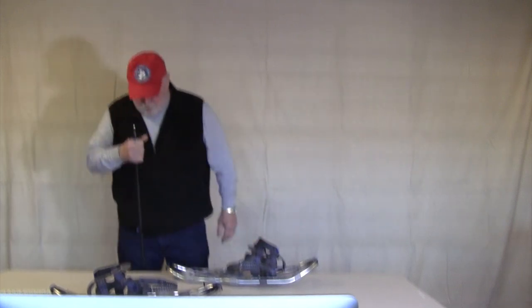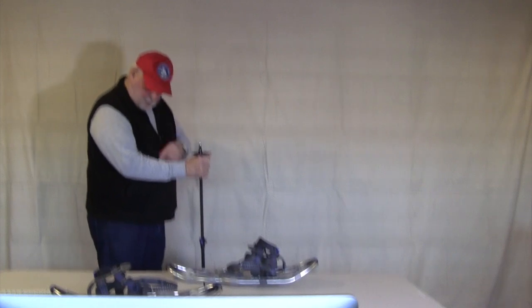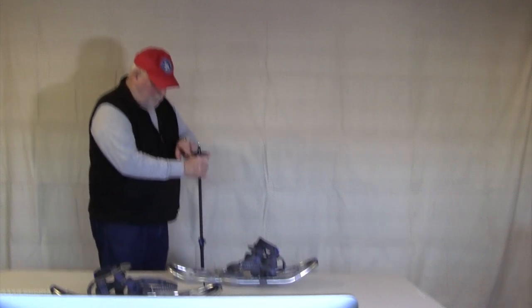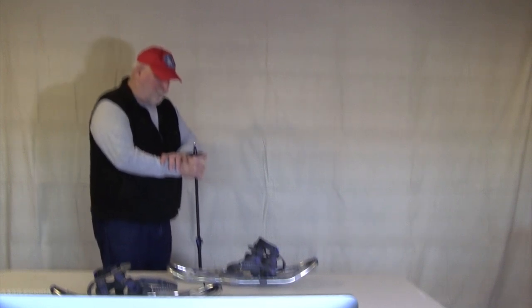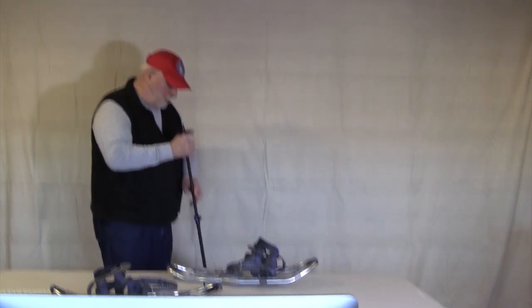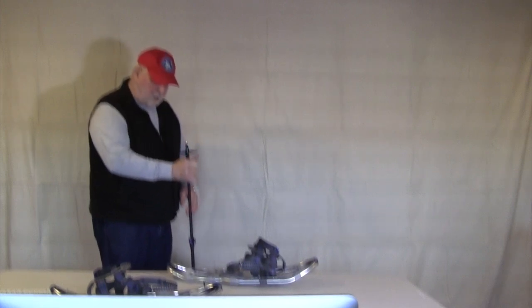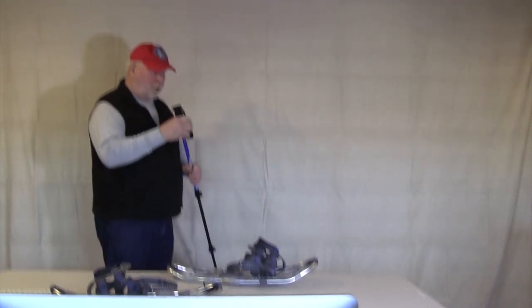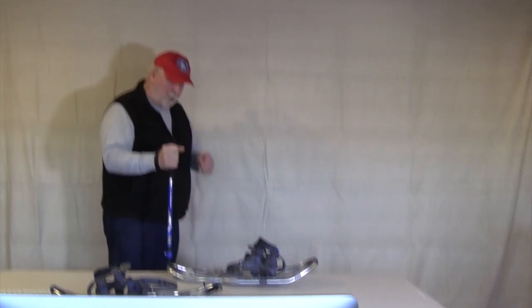Your pole should be about the height where, when you grab hold of it just under the basket, your arm is about 90 degrees. If you're long striding or in deeper snow, you might lengthen them out so that's slightly longer, put your hand through here and you're ready to go.